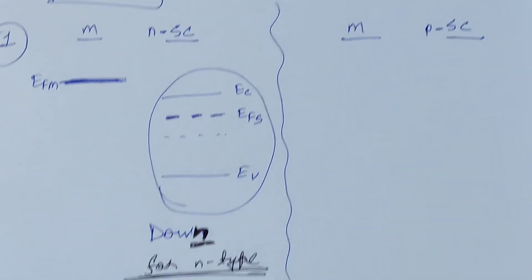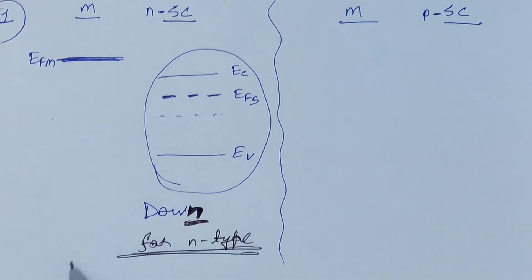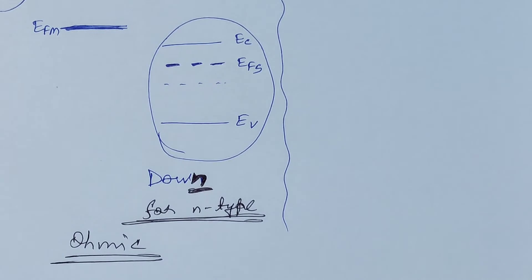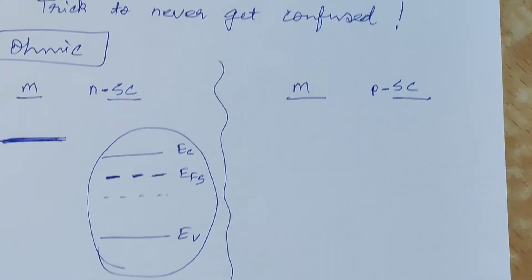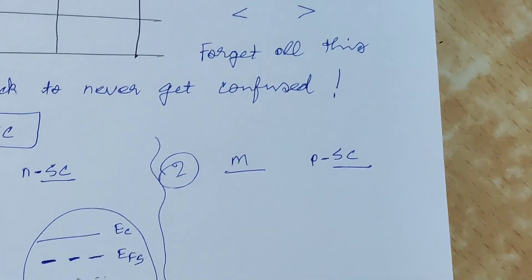So if it is below or down to the Fermi level of the metal, then you can identify it to be an ohmic contact. To make it easier, it is n-type semiconductor and in down we have n.